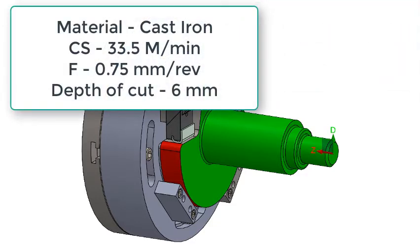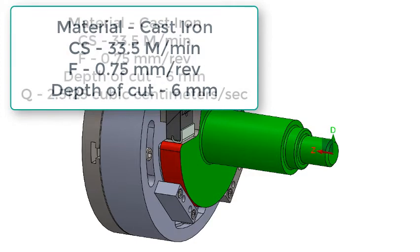The material being cut is cast iron. It has a cutting speed of 33.5 meters per minute, a feed rate of 0.75 millimeters per rev will be used, and the depth of cut will be 6 millimeters.